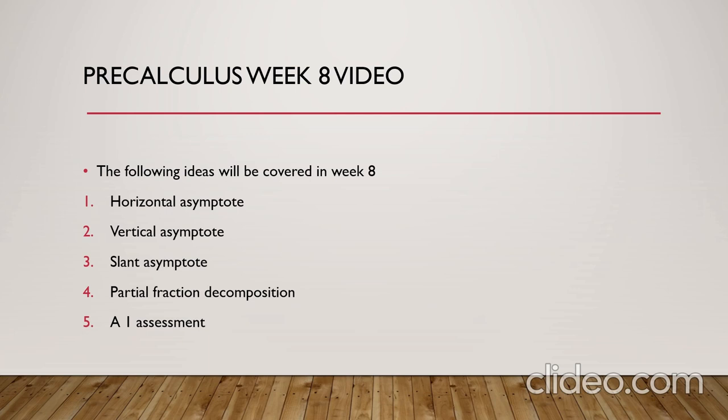The vertical asymptote is a vertical line x equals a, where the graph approaches the line as the value of y goes to infinity or negative infinity. We will also learn how to find the vertical asymptote for different rational functions, focusing on the case when we have a polynomial over a polynomial.